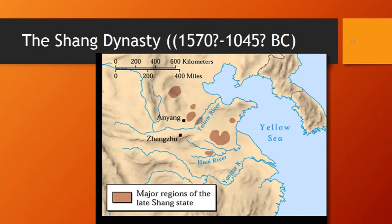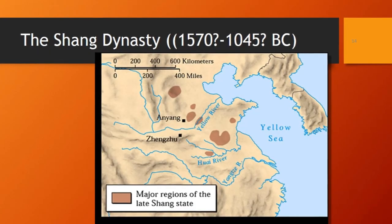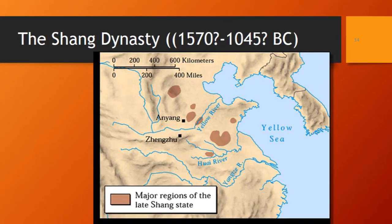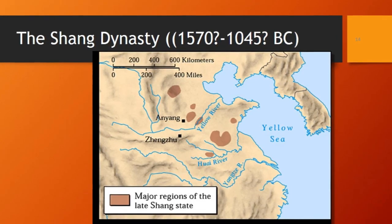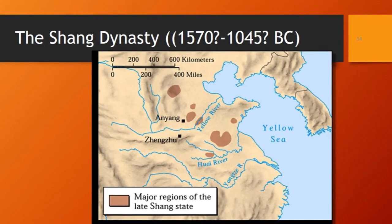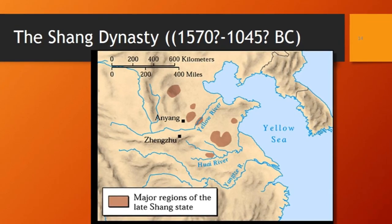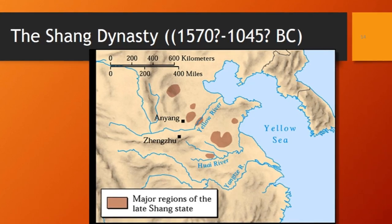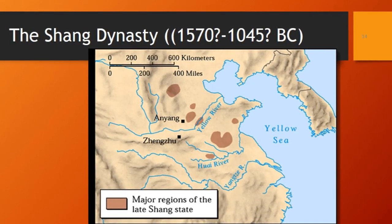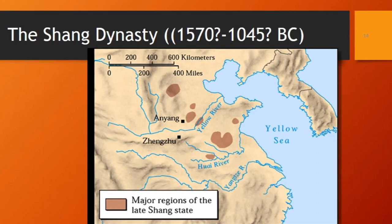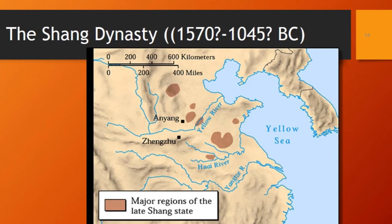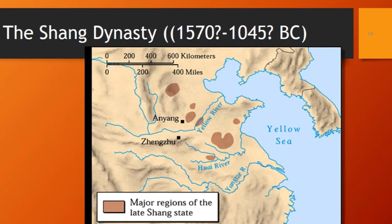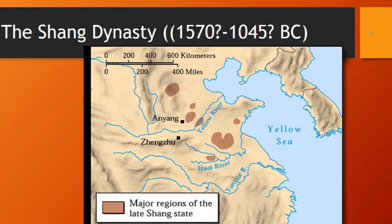Let's move on to the earliest dynasty we actually know quite a bit about — the Shang Dynasty, which lasts from about 1570 to about 1000 BC. The map you're looking at shows some of the territory they controlled and the major urban areas controlled by the Shang. The capital during this period is Anyang.